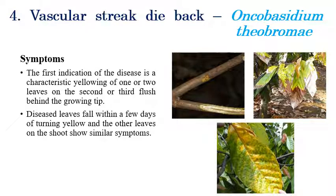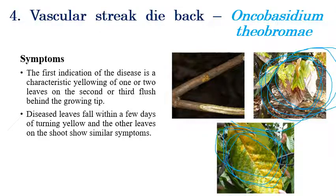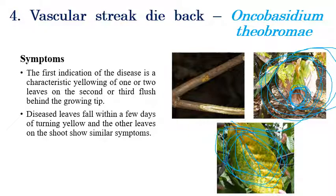Vascular Streak Dieback is caused by Oncobasidium theobromae. The first indication is yellowing of leaves. Alternate yellow and green patches can be seen, with the regions beside the midrib turning completely yellow. Within a few days, the yellowed leaves slowly turn wilted, and defoliation occurs in later stages.